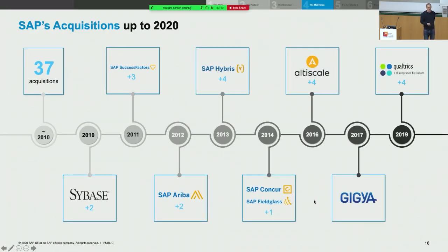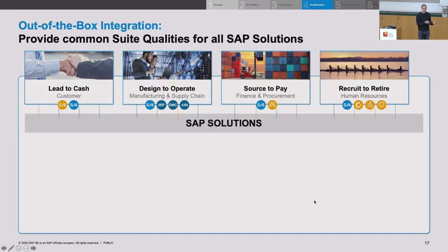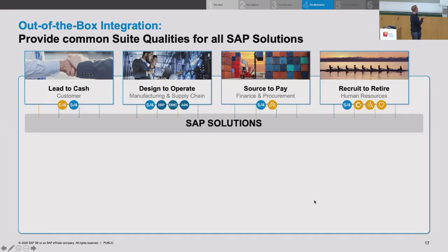I want to give you a different perspective. I already showed you these end-to-end processes: lead to cash — everything around the customer; design to operate — everything around manufacturing and supply chain; source to pay — finding the right suppliers; and recruit to retire. The logos here represent the different products that play into each process, and remember we acquired many of those.